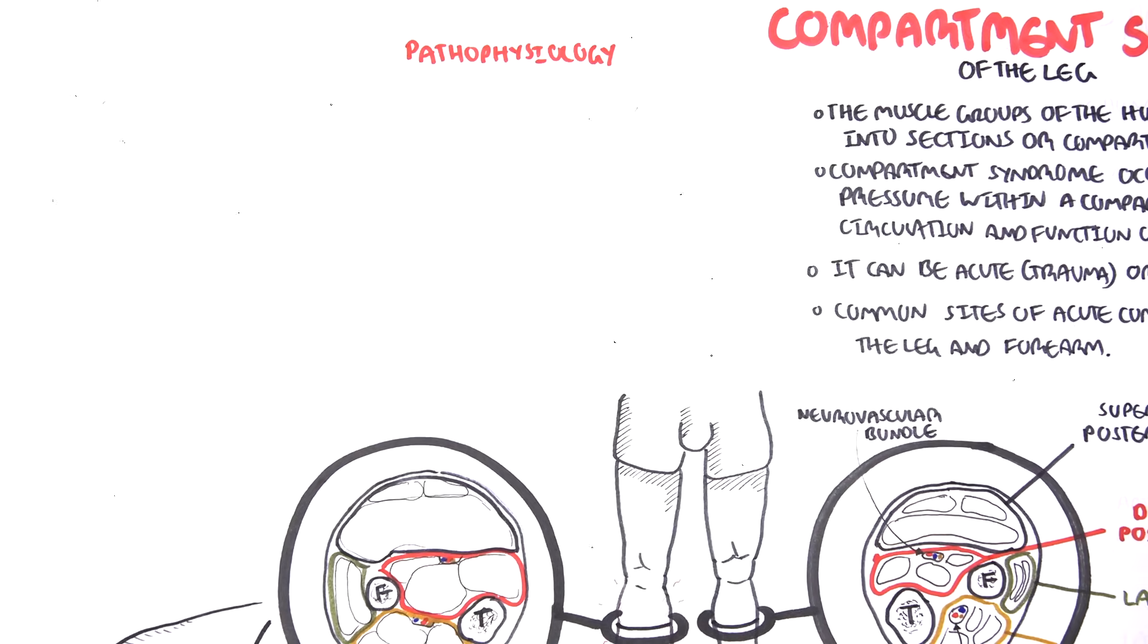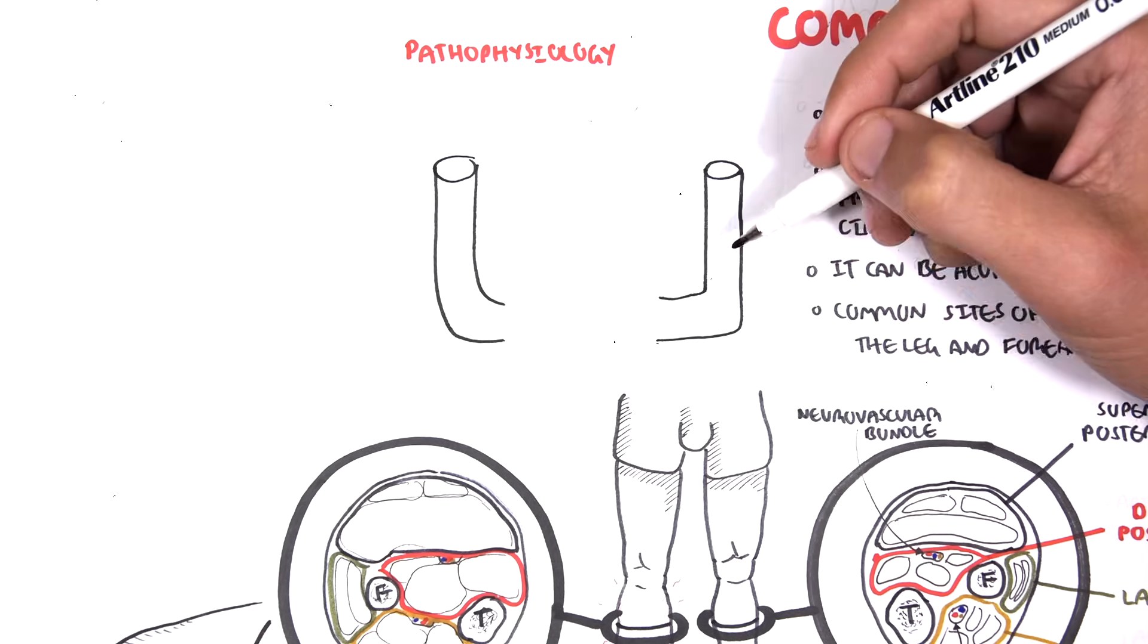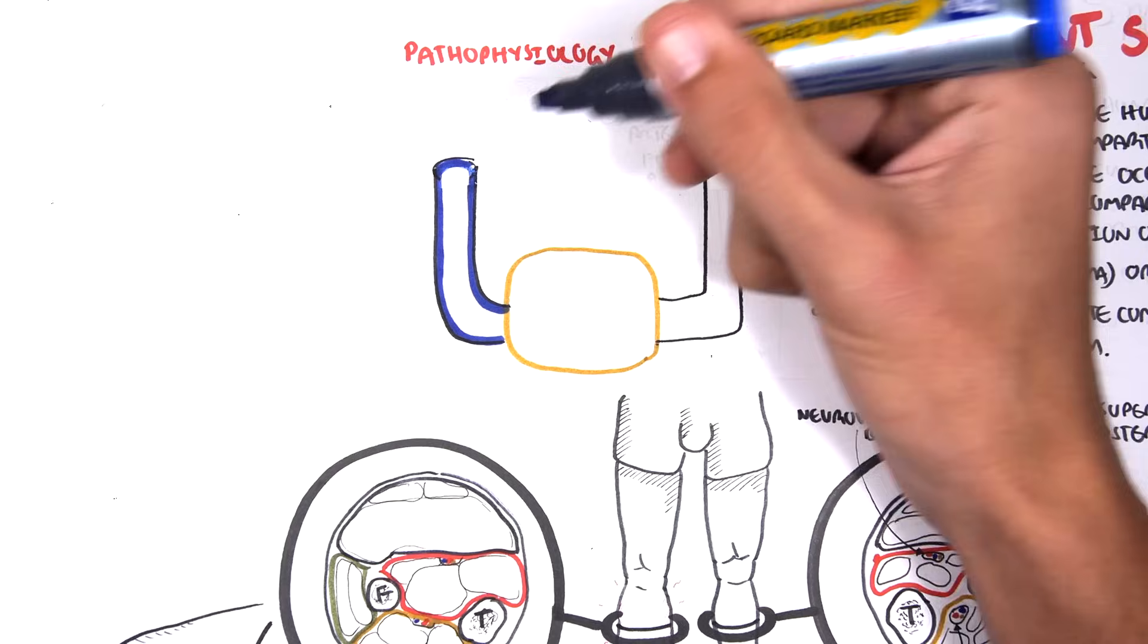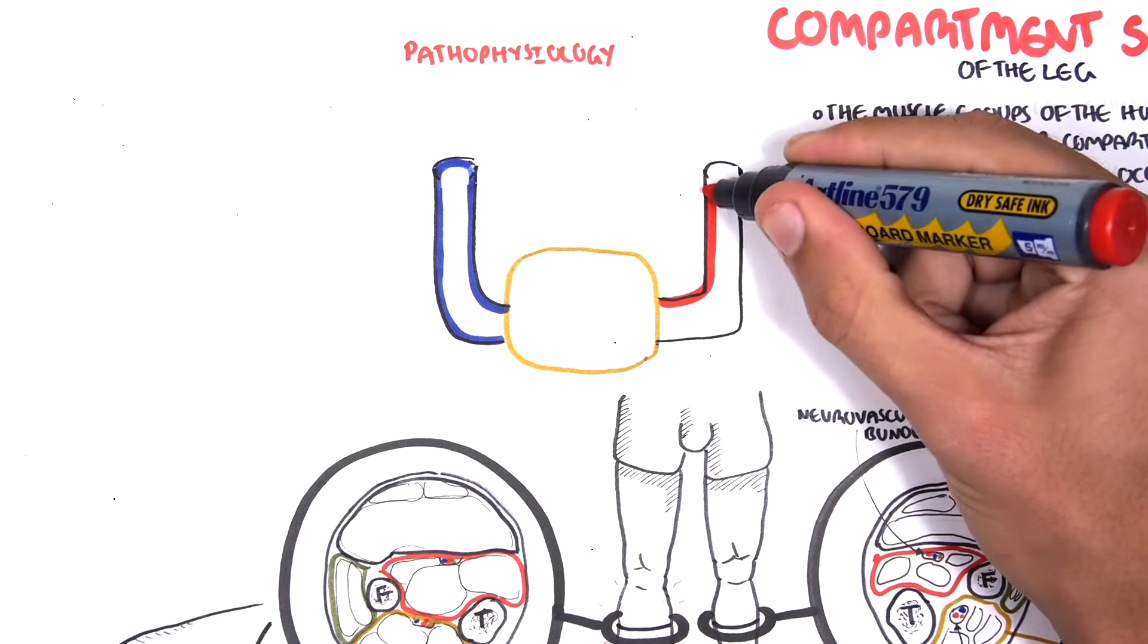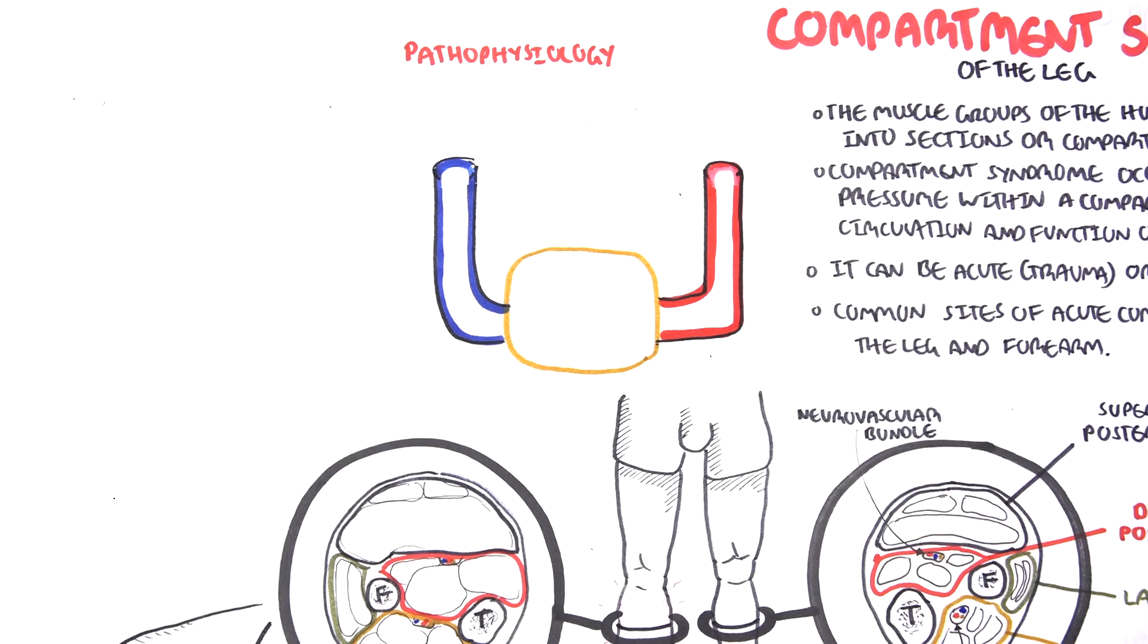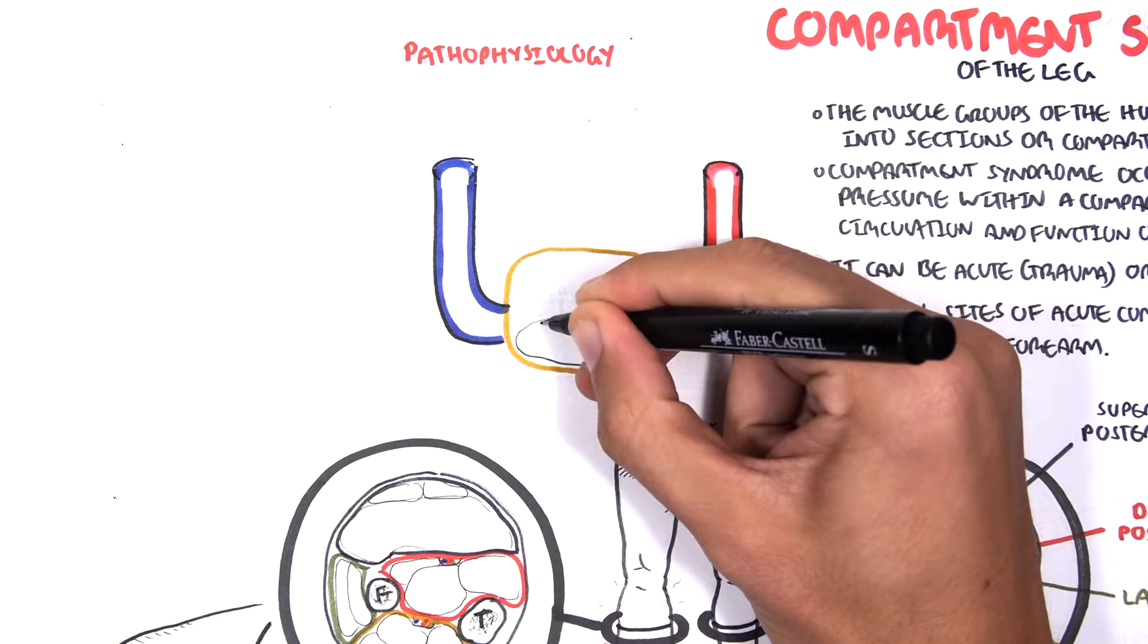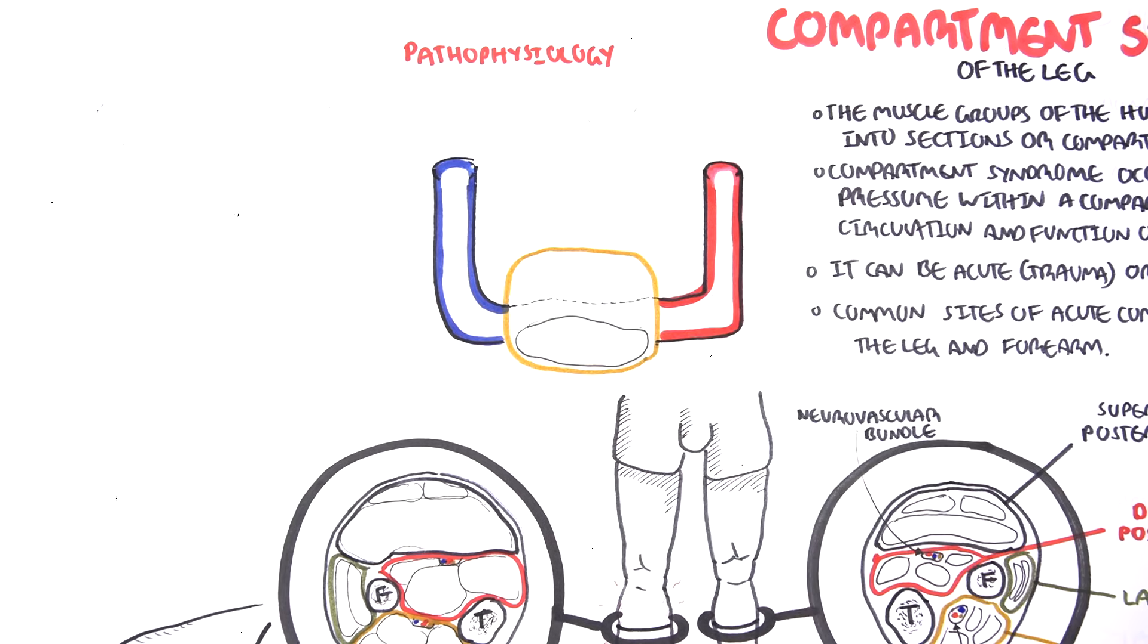The pathophysiology behind compartment syndrome, to put it simply: here in blue is the vein that drains from the muscle and extremities, here in red is the artery that supplies the muscle with oxygen, and here in yellow in the middle is the muscle itself, the compartment essentially.